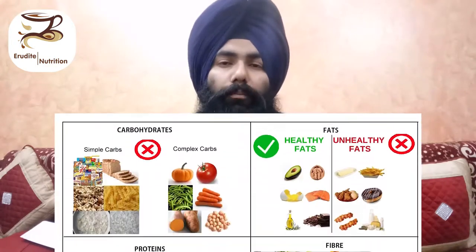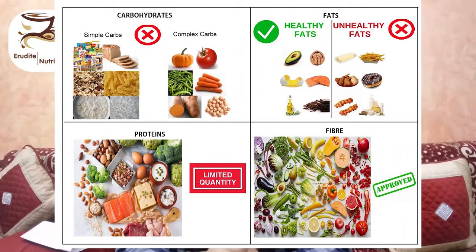That was a brief discussion about macronutrients and how they affect blood sugar levels. In the next video, we're going to talk about food groups: the cereal group, the lentils and pulses group, the vegetable group, the fruit group — one of the trickiest ones — and then the group of milk, eggs, chicken, and fish.